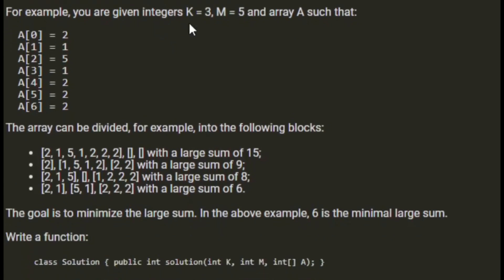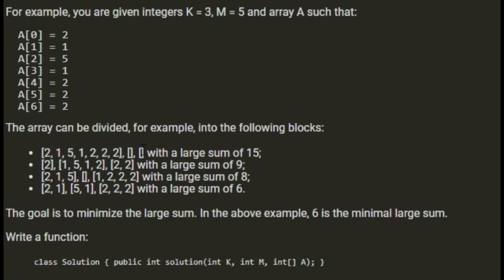For example, you're given integers k=3, m=5, and array A. The array can be divided into the following blocks. We want to divide the array into k=3 blocks. We can divide it into [2, 1, 5, 1, 2, 2, 2, 2], which is the whole array with two empty blocks, giving a large sum of 15. If we divide it into [2, 1] and [5, 1, 2] and [2, 2, 2], the large sum is 9.